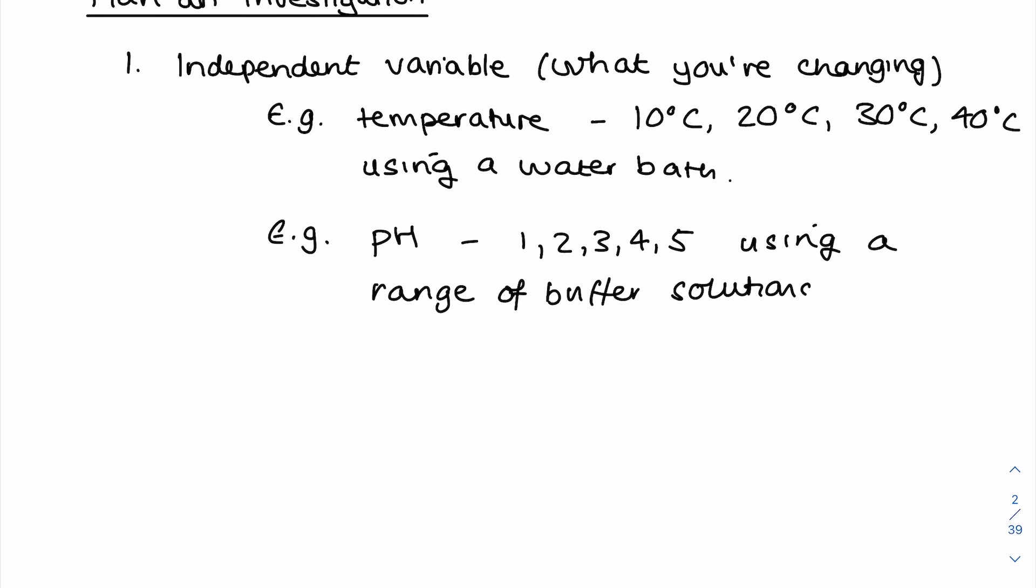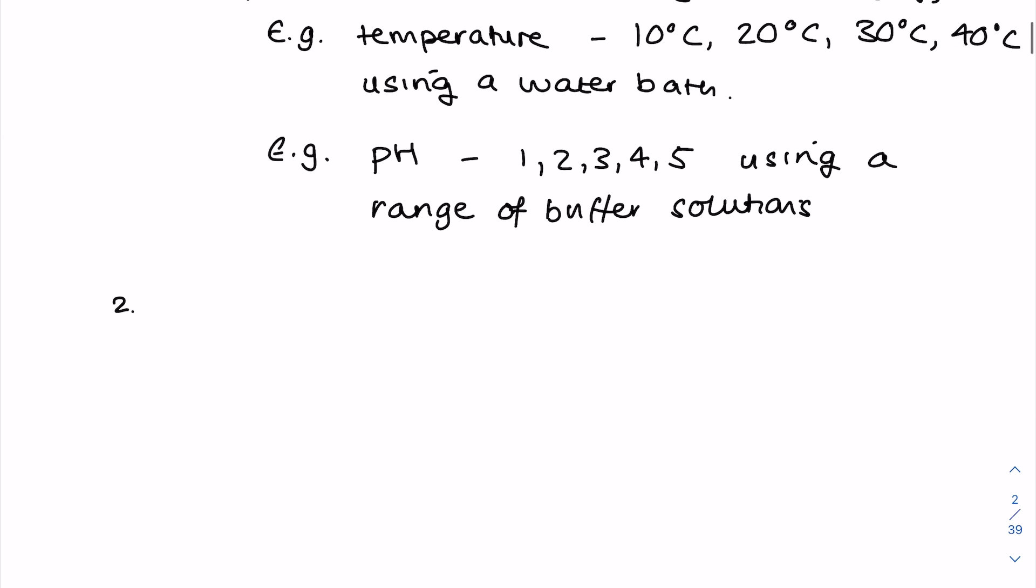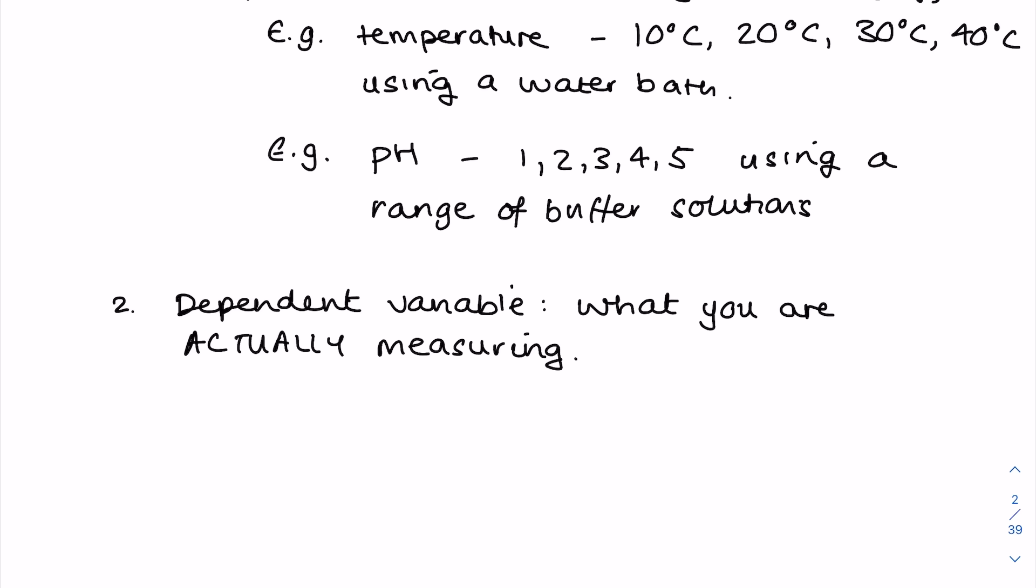The next step when you're making your investigation plan is you want to state your dependent variable, and I can't reiterate that enough. That is what you are actually measuring. It's something physical that you do in the laboratory. So you should never say the rate of oxygen production because the rate is not something that you can physically measure. You can use your apparatus to find some numbers that you can then pop into the rate equation, but the dependent variable itself is what you're actually measuring.